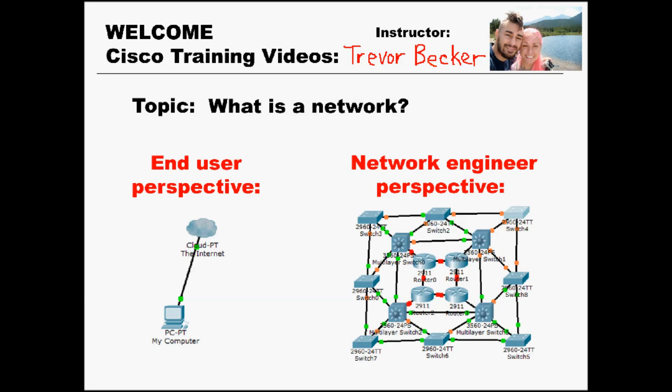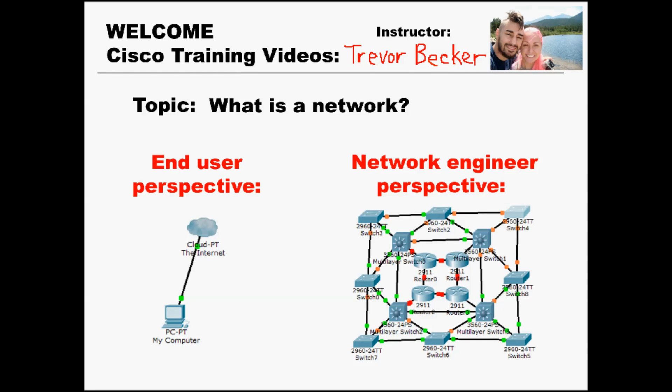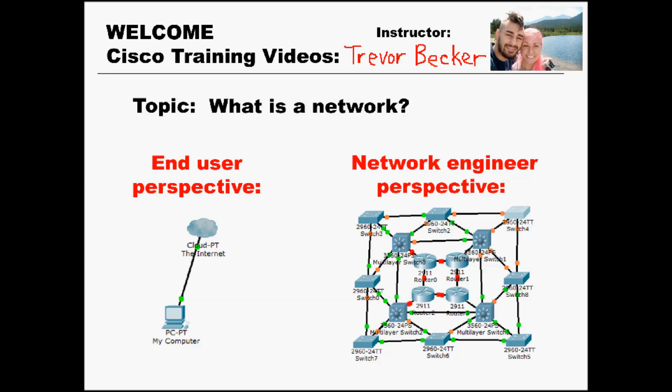From most end users' perspectives, the internet is just some massive entity that they need to visit in order to see different types of websites. However, from a network engineer's perspective, the internet and networks are a much greater and intricate idea than that. The internet is simply a collection and web of networks all woven together, and these millions of individual networks all over the world collectively create what we refer to as the internet — the internet is just one giant network.